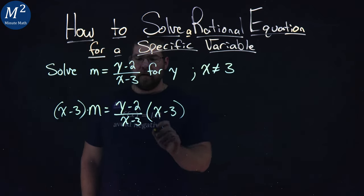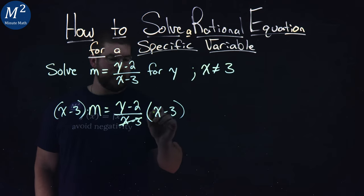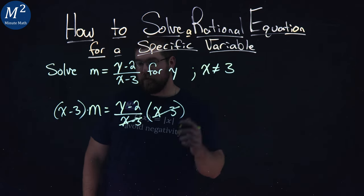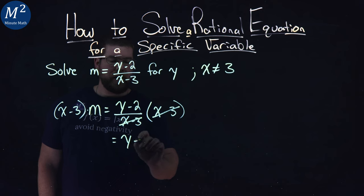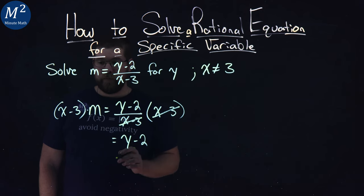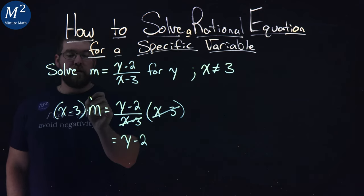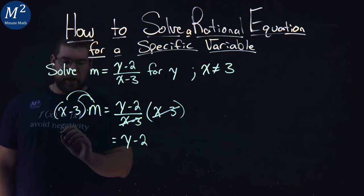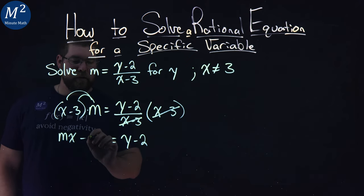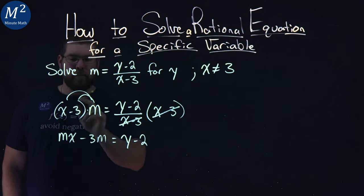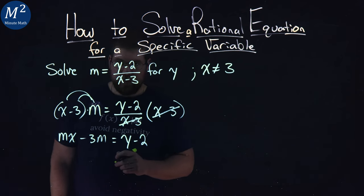What that does on the right-hand side cancels out the x minus 3. That's what we wanted. We have y minus 2 left over. On the left, if we distribute the m across, we can have it as mx minus 3m. m times x, mx minus m times 3 is 3m.